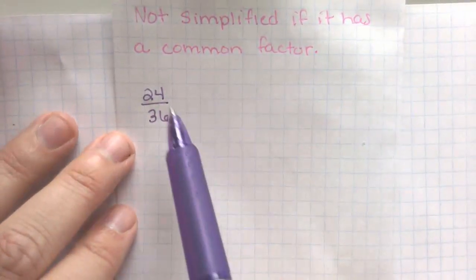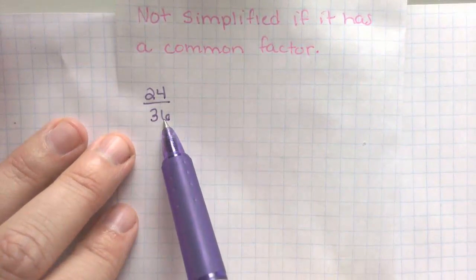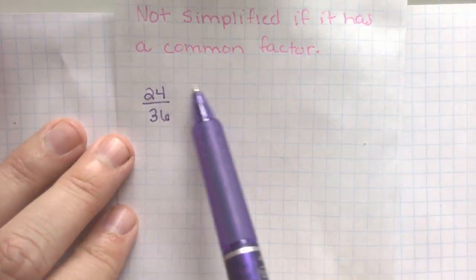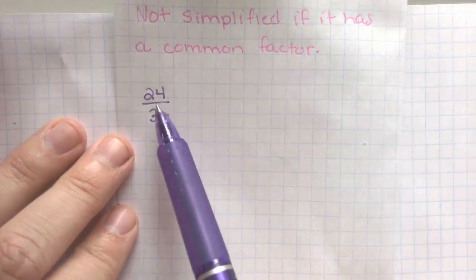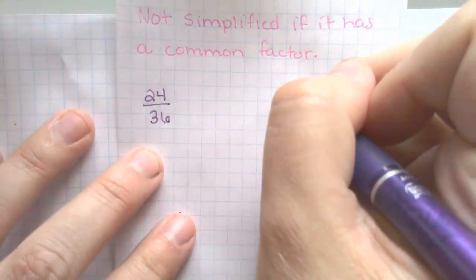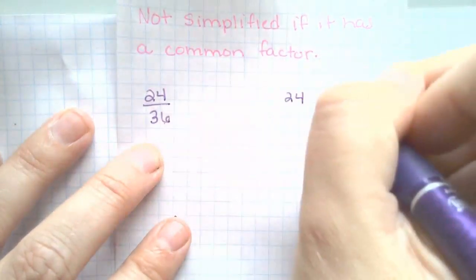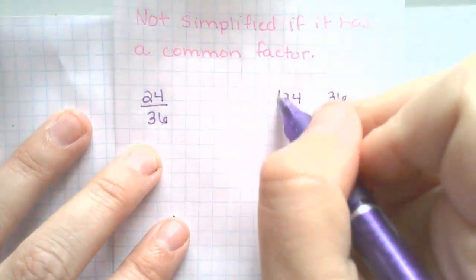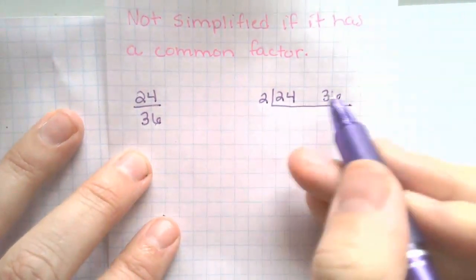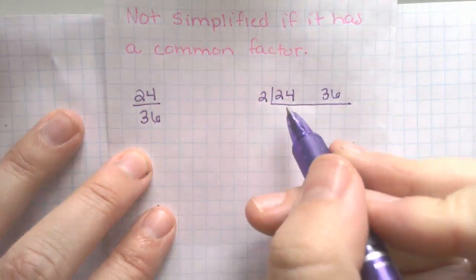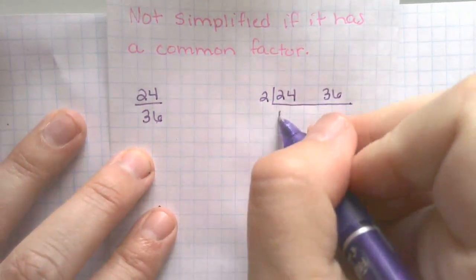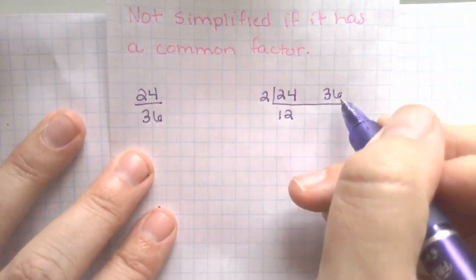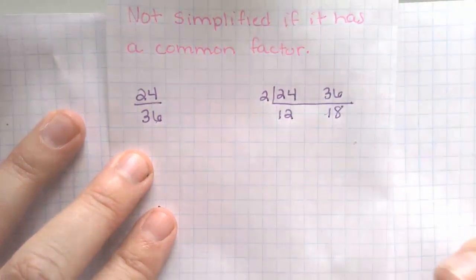Now in this example, I do not know the greatest common factor here to go ahead and divide. So let's go ahead and use the ladder method, and that's going to help us. So 24 and 36. I know that 2 goes into both of them. They're both even numbers. 24 divided by 2 is 12. 36 divided by 2 is 18.